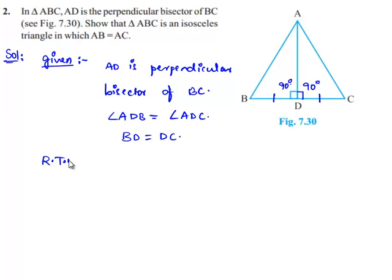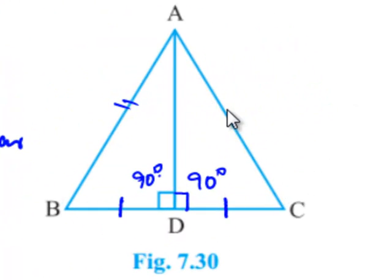Let us note down what is required to prove: that triangle ABC is isosceles with AB equal to AC. In order to prove that AB equals AC,